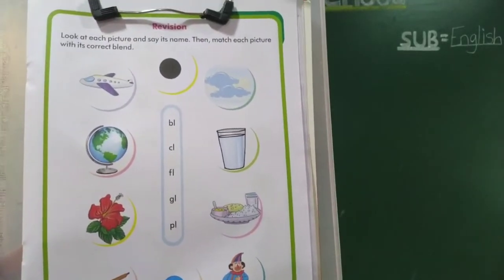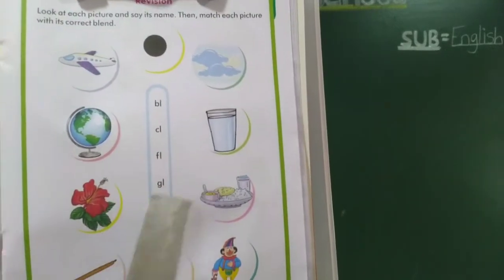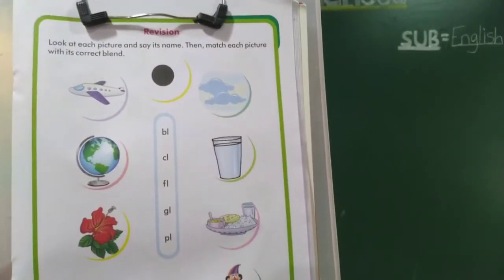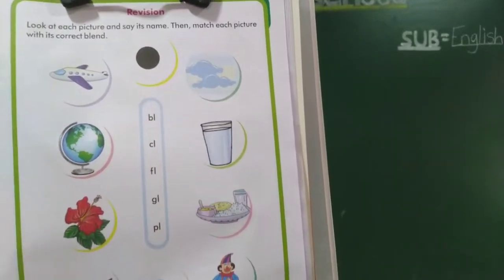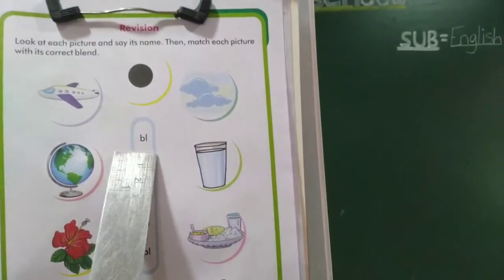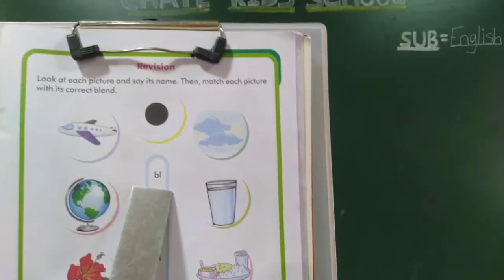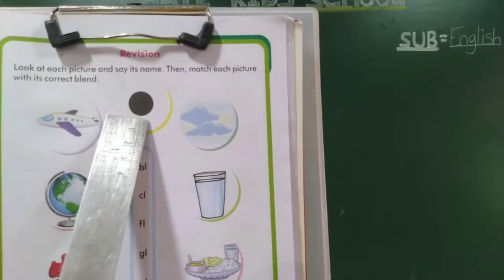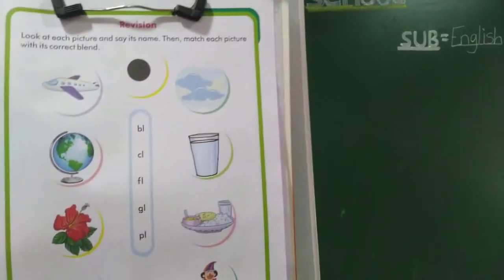Apart BL, CL, FL, GL and PL sound. Correct. Apart, match correct. BL, what is it? Black, blue.